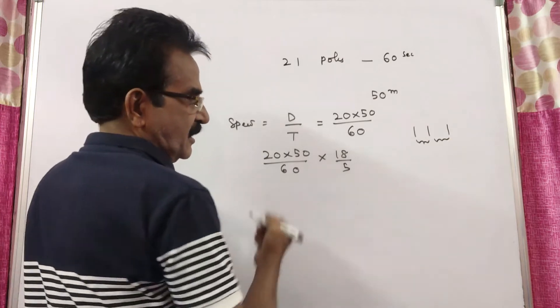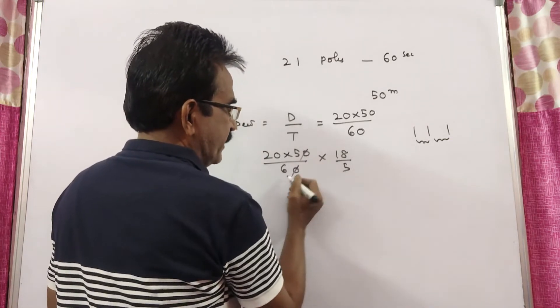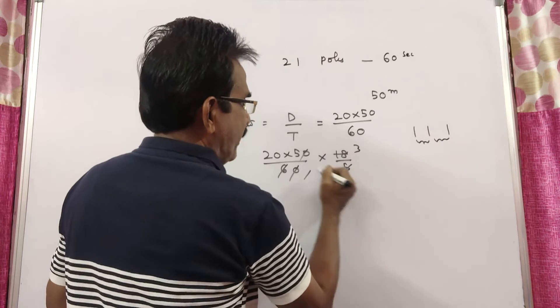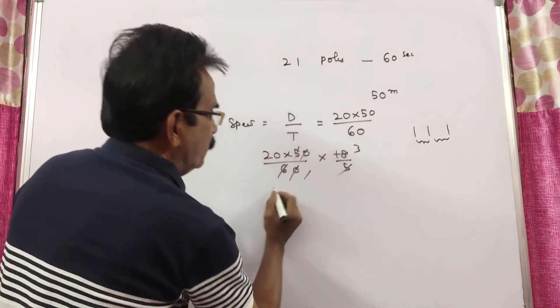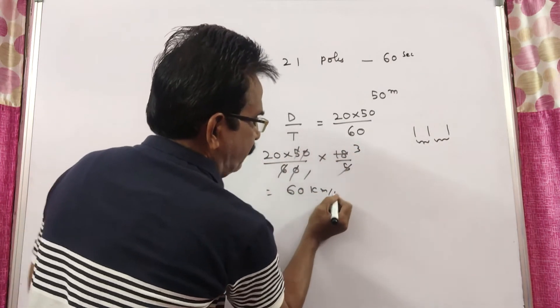0 gets cancelled, 6, 3's, 5, 5 gets cancelled, 20 into 3, 60 Kmph is the answer, friend.